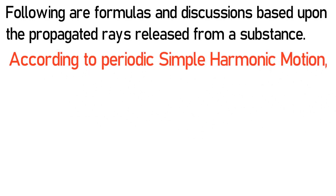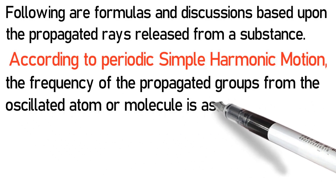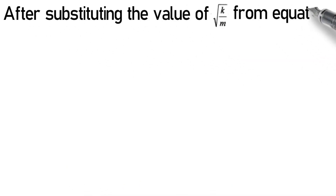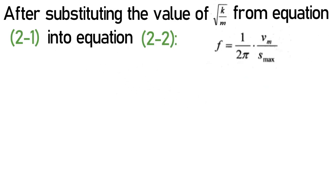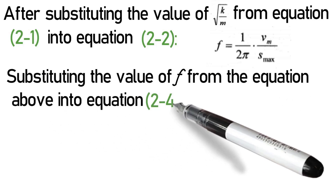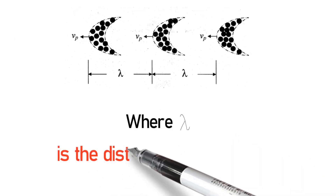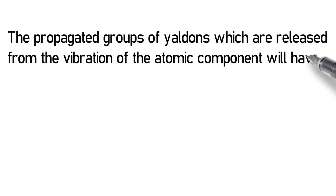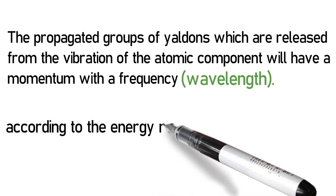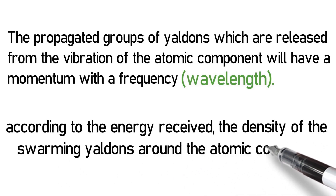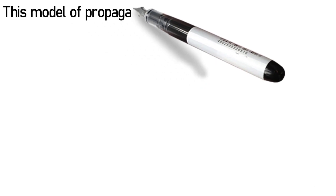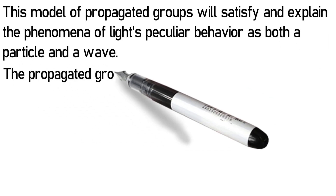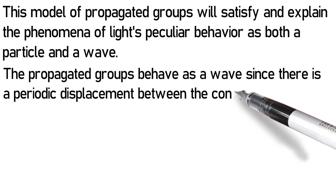Following are formulas and discussions based upon the propagated rays released from a substance. According to periodic simple harmonic motion, the frequency of the propagated groups from the oscillated atom or molecules is given, followed by the velocity of the propagated ray, and subsequent substitutions into equations 2-1 through 2-5, where the difference between two consecutive propagated groups is defined. The propagated groups of Yaldins released from the vibration of the atomic component will have a momentum with a frequency and wavelength according to the energy received, the density of the swarming Yaldins, and the atomic component's natural frequency. This model will satisfy and explain the phenomena of light's peculiar behavior as both a particle and a wave.